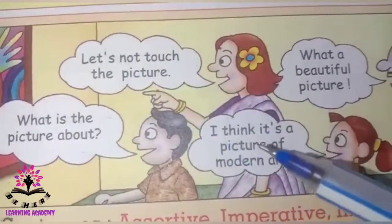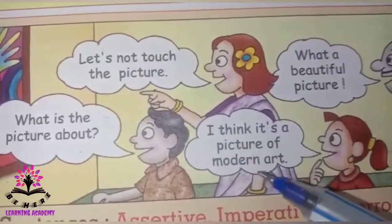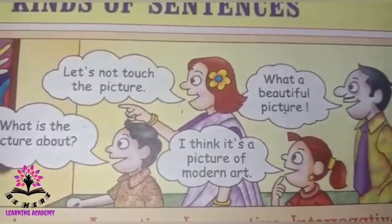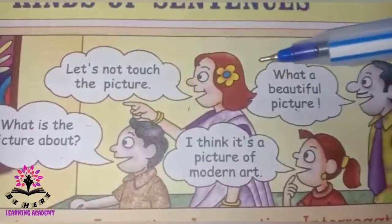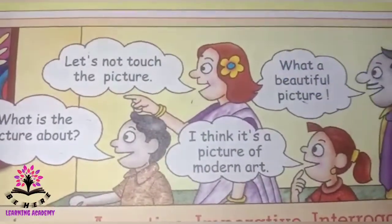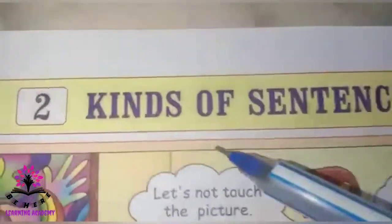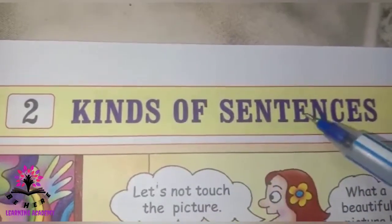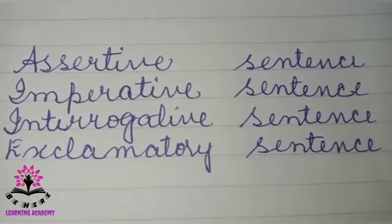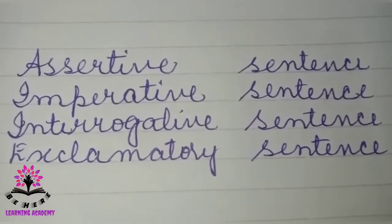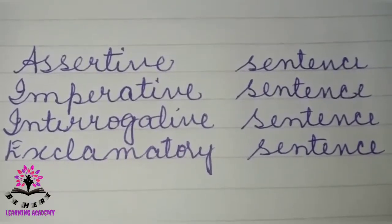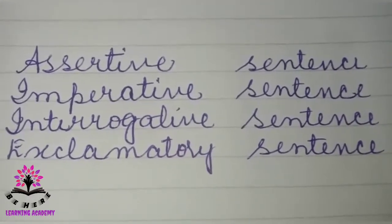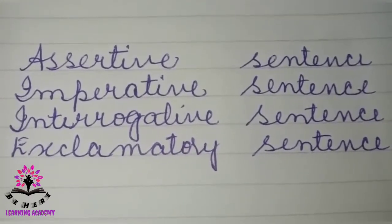First one is: what is the picture about? Let's not touch the picture. I think it's a picture of modern art. What a beautiful picture! So what do these sentences tell about? They tell that there are different kinds of sentences. So today let us learn four types of sentences.